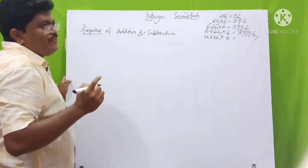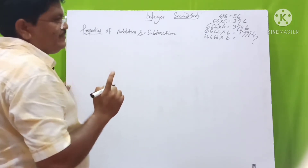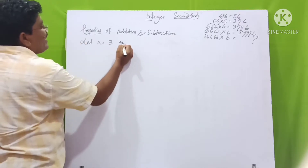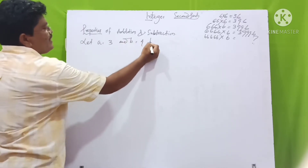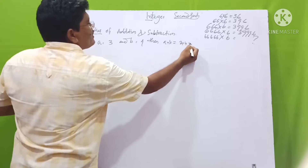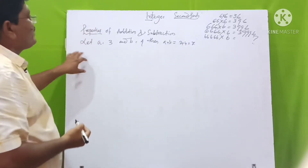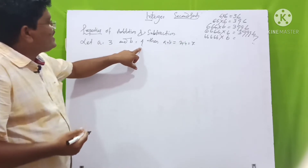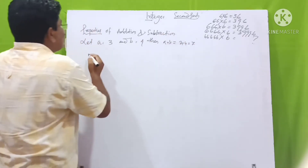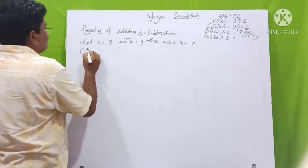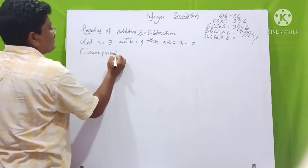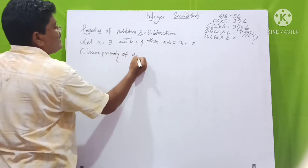Here, if we take two integers, let a = 3 and b = 4. Then a + b = 3 + 4 = 7. So, a is an integer, b is an integer, and the addition of a and b — the sum of a and b — is also an integer. This law we call the closure property of addition.